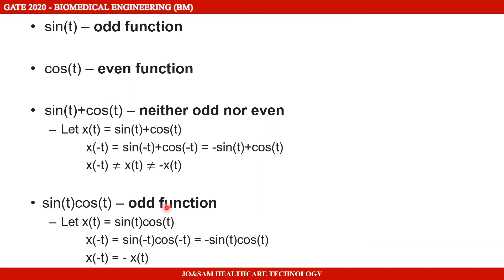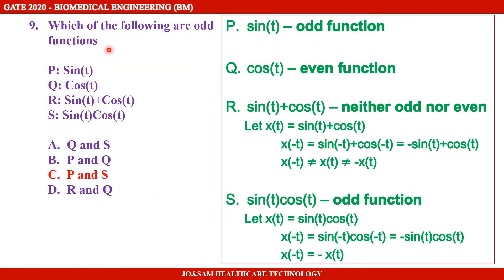Option S: sin t into cos t — let us check if this is an odd function. Let x(t) = sin t · cos t. Replacing t with −t: x(−t) = sin(−t) · cos(−t) = (−sin t)(cos t) = −sin t · cos t. This equals minus of x(t). Therefore x(−t) = −x(t), confirming sin t · cos t is an odd function.